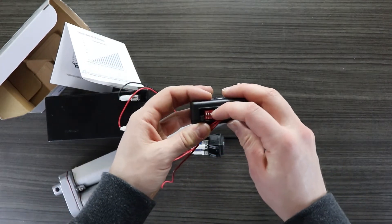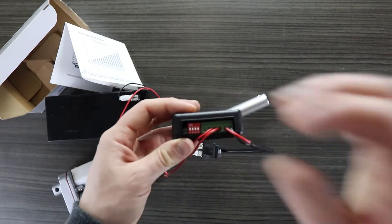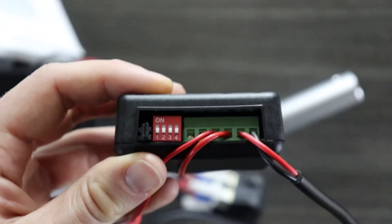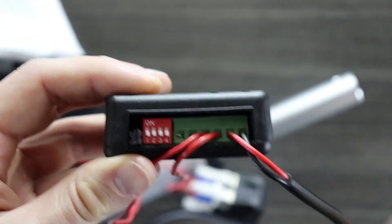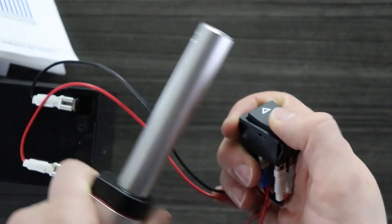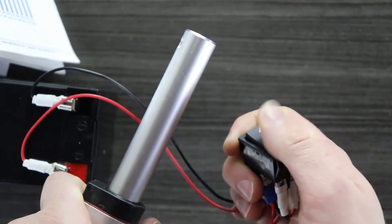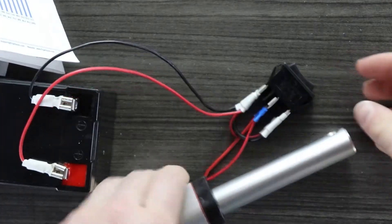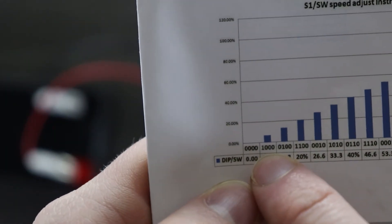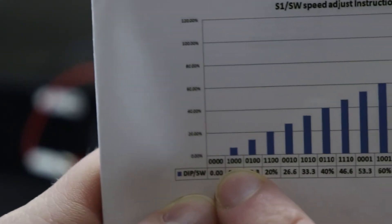Now if I go ahead and lower all these switches down, so that they're all facing downwards, and I go ahead and use the switch, you'll notice that it doesn't move at all. Then according to the table if I set the first switch to the up state and the remaining of the switches remaining off, it'll be at the slowest possible speed. So I'll go ahead and do that right now.